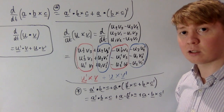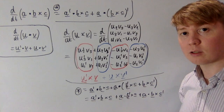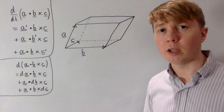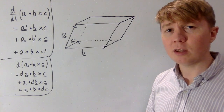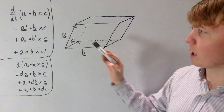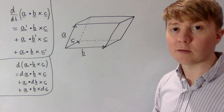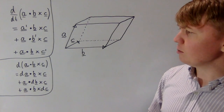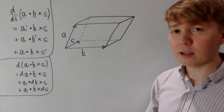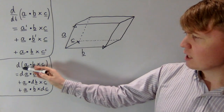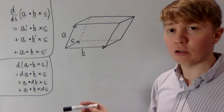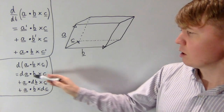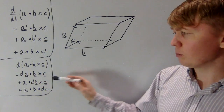Notice just how similar this looks to the product rule for three real-valued functions. We'll finish with a geometric interpretation. Before differentiating, the scalar triple product of three vectors can be interpreted as the volume of a parallelepiped formed by those three vectors — or the negative of that volume if it's negative. So what is the geometric interpretation of its derivative, and why does it have this form?